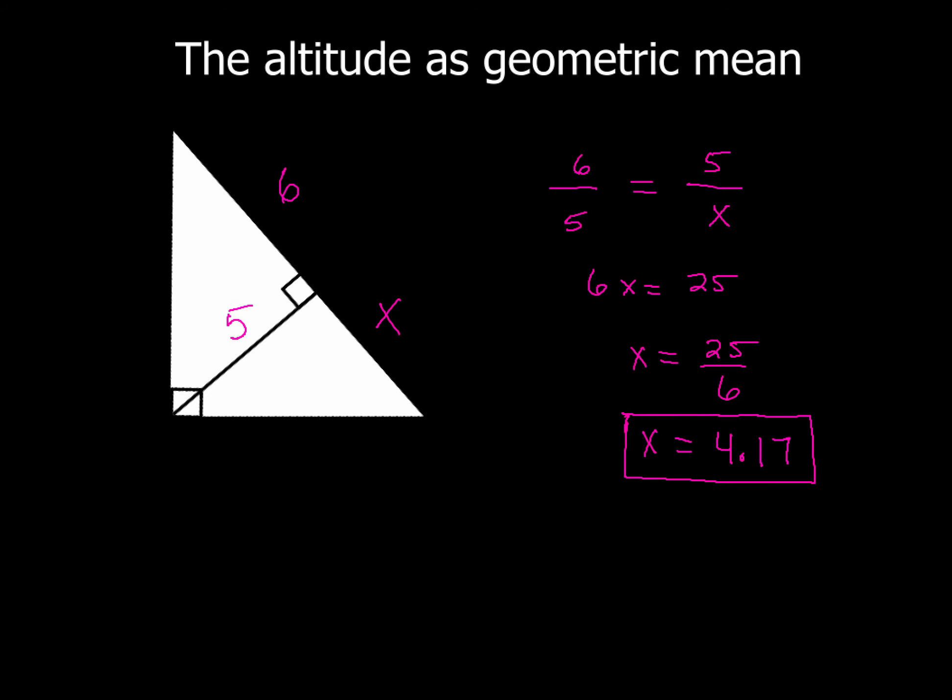So how did you do on this one? You should have recognized that 5 is your altitude, and that goes in the geometric mean slot. So that's going to go in this place and this place. And when you cross multiply and divide, you figure everything out. You get X is about 4.17.